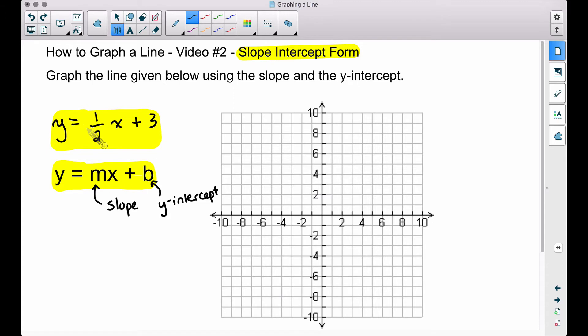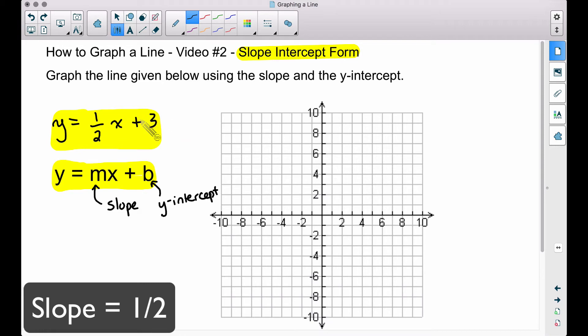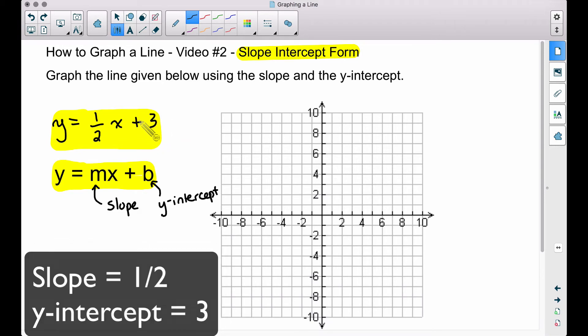Therefore, in this equation, the one-half is our slope, rise over run. The b in this case is three, positive three. Pay attention to your signs there. Let's start by plotting the y-intercept on our y-axis. We will put a dot on three, which is right there.